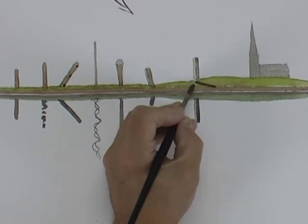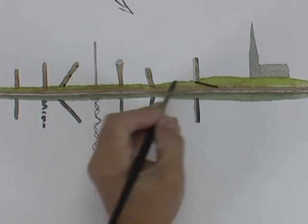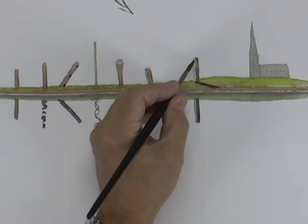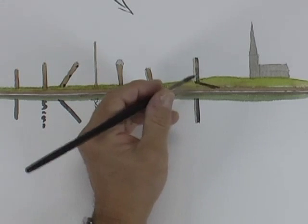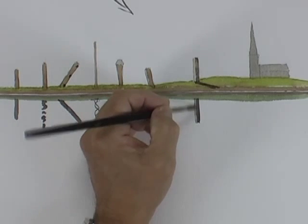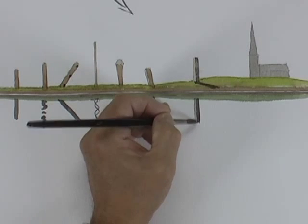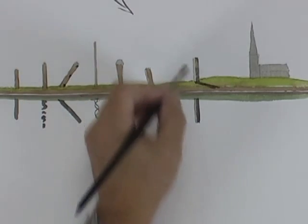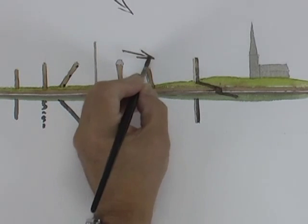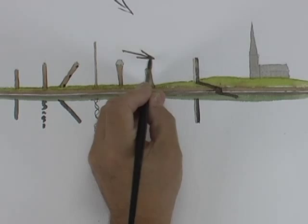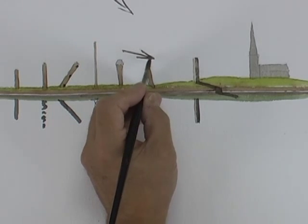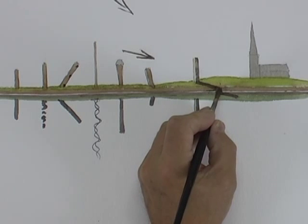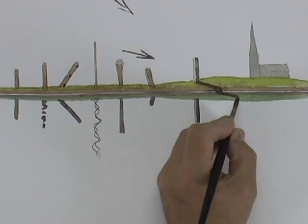So if you get confused between shadows and reflections, just treat them differently. Remember, reflections are always vertically below the item that's being reflected. Shadows will vary according to the position of the sun. Incidentally, if you have a very low sun, early morning or late afternoon, so the shadows are much longer, then the shadow will very often carry over the river bank and fall onto the water.